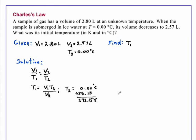So now we can substitute in and solve for the temperature. T1 is equal to our initial volume 2.80 liters times T2, 273.15 K, and this is divided by our volume 2 which is 2.57 liters.